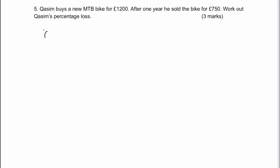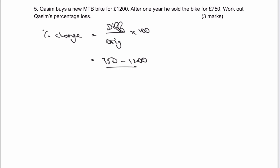The only thing to be aware of with this is the formula: percentage change equals difference divided by original, multiplied by 100. So the difference is going to be what he sold it for — £750 — take away what he bought it for, because it's going to be a negative difference, it's a loss, divided by the original price of £1,200, multiplied by 100. When I put that into my calculator, I get minus 37.5%.